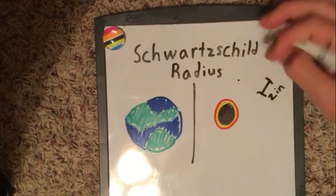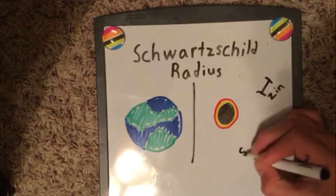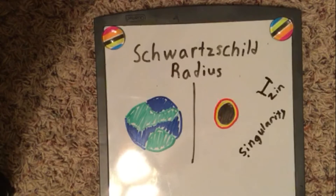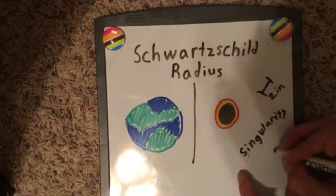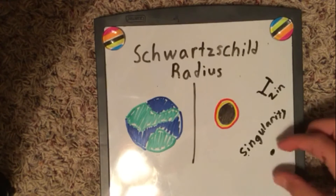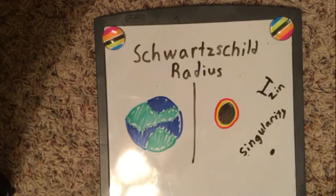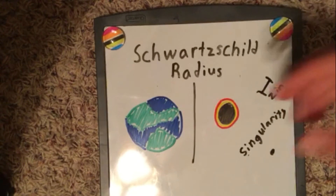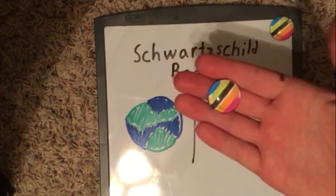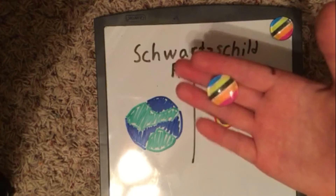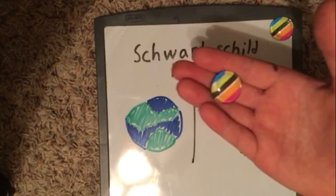A black hole is when an object is compressed to a very, very small point, called a singularity. Basically, a singularity is when an object is crushed very, very small and has an incredibly large gravitational pull. Even though you might think something that small is very light, you're taking all of earth and compressing it to a few times the size of a marble — it would still be as heavy as earth, but that small. So my hand would be crushed and I would be immediately sucked to it.